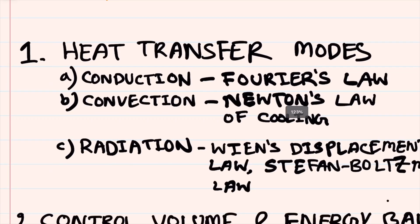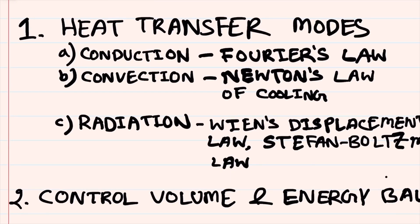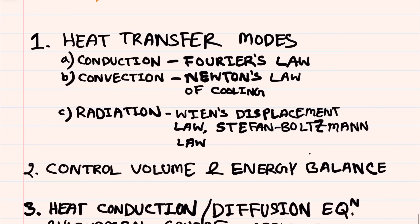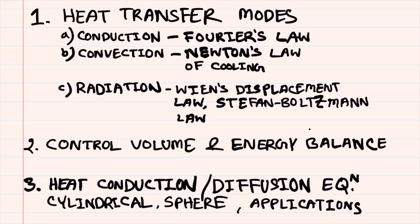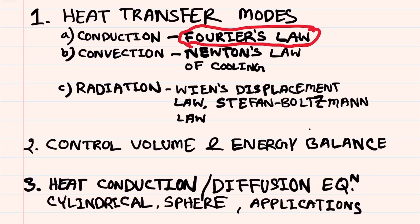The heat transfer course initially discusses transfer modes. There are different mechanisms of how heat is transferred. We have conduction, where heat transfers from different materials due to lattice vibration; convection, where heat transfers due to bulk motion of the fluid; and radiation, where heat transfer occurs without any medium through electromagnetic radiation. We will also go through basic models such as Fourier's law for conduction, which gives us concepts such as thermal conductivity — a value that quantifies how well a material conducts heat.